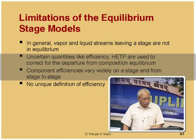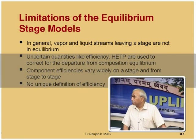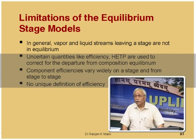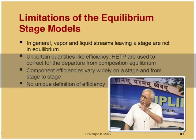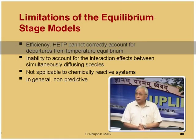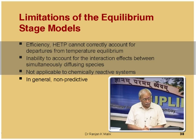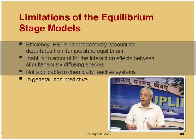Component efficiencies vary widely on a stage and from stage to stage; there is no unique definition of efficiency, so this remains a fuzzy area that is not well understood. Efficiency and HETP cannot correctly account for departures from temperature equilibrium. There is also inability to account for interaction effects between simultaneously diffusing species, and the approach is not applicable to chemically reactive systems—which have not been addressed in the MESH framework.